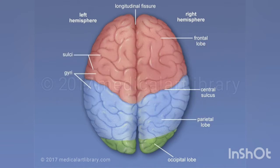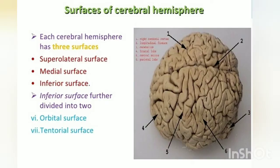Let us look into each external feature in detail. Surfaces of the cerebral hemisphere — there are three surfaces: the superior lateral surface, the medial surface, and the inferior surface. The superior lateral surface is convex and related to the cranial vault. The medial surface is flat and vertical. The inferior surface is irregular and is divided into an anterior part, that is the orbital surface, and a posterior part, that is the tentorial surface.